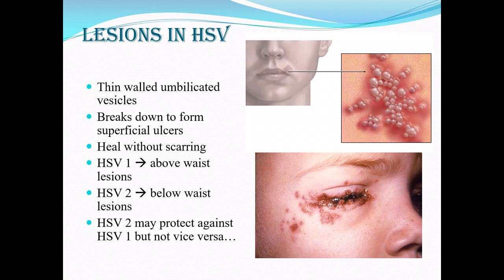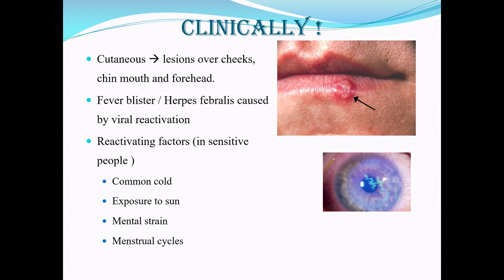Classically, HSV1 produces lesions above the waist and HSV2 produces lesions below the waist. HSV2 infection may protect against the patient developing HSV1 infection, but the opposite does not happen. Clinically, you see lesions over the cheeks, chin, mouth, and forehead. There can be reactivation of these lesions whenever the patient develops fever, respiratory infection, exposure to sun, stress, or in some patients even during menstrual cycles.